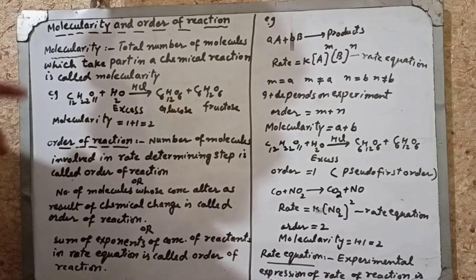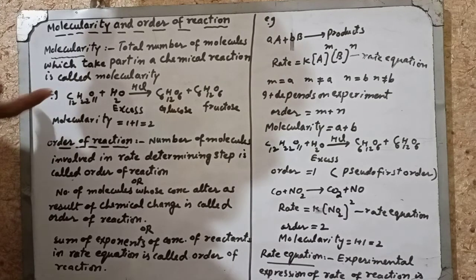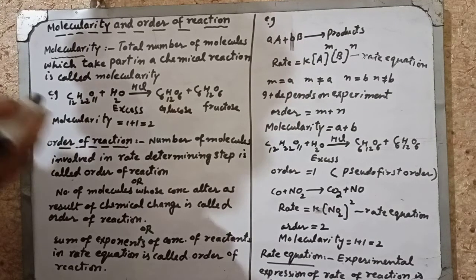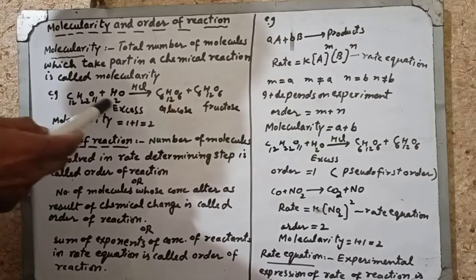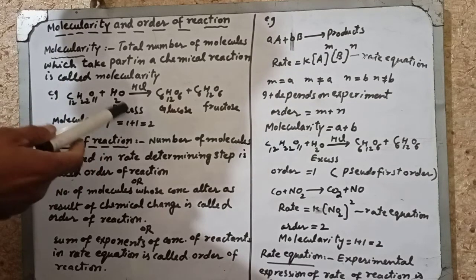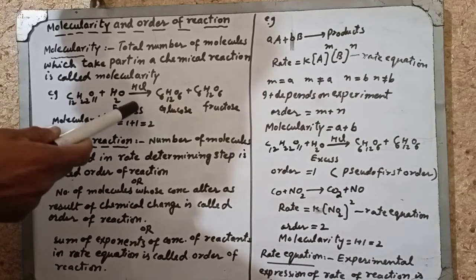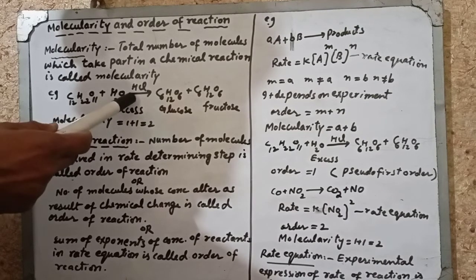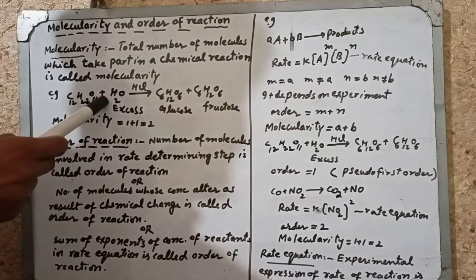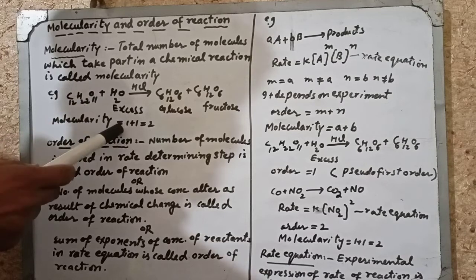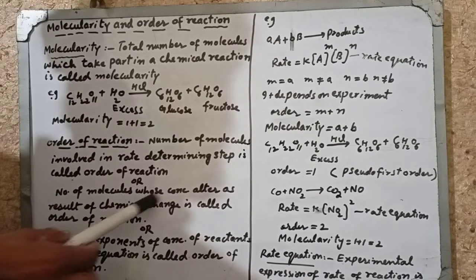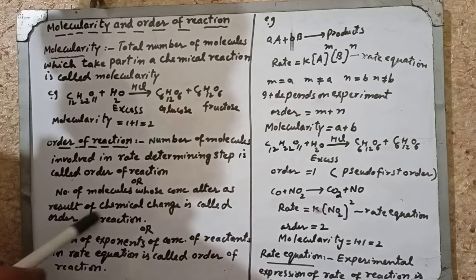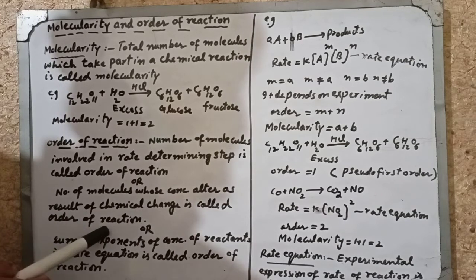Water is added in excess, so 2-3 molecules break and it makes no difference — the concentration of water remains constant. Therefore its order will be first; this is a first order reaction. But its molecularity is 2. The number of molecules whose concentration alters as a result of chemical change is called order of reaction.